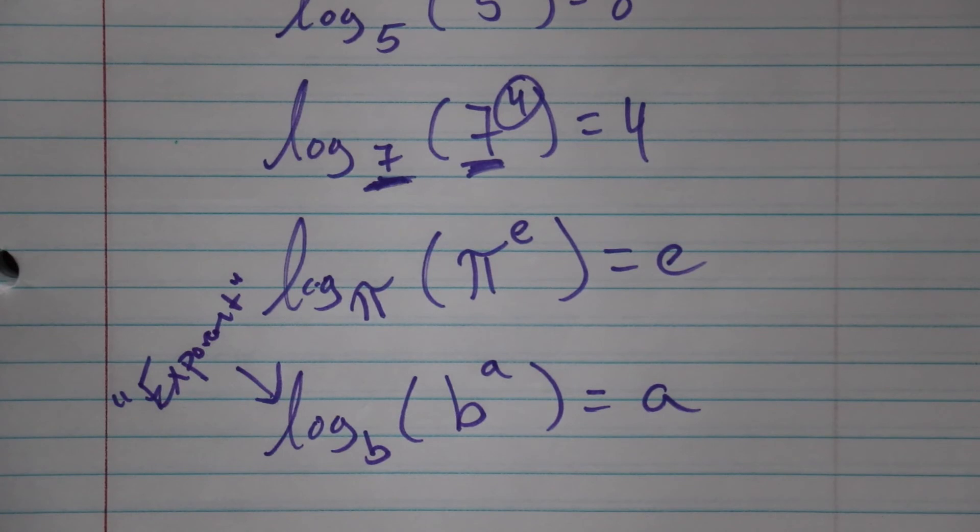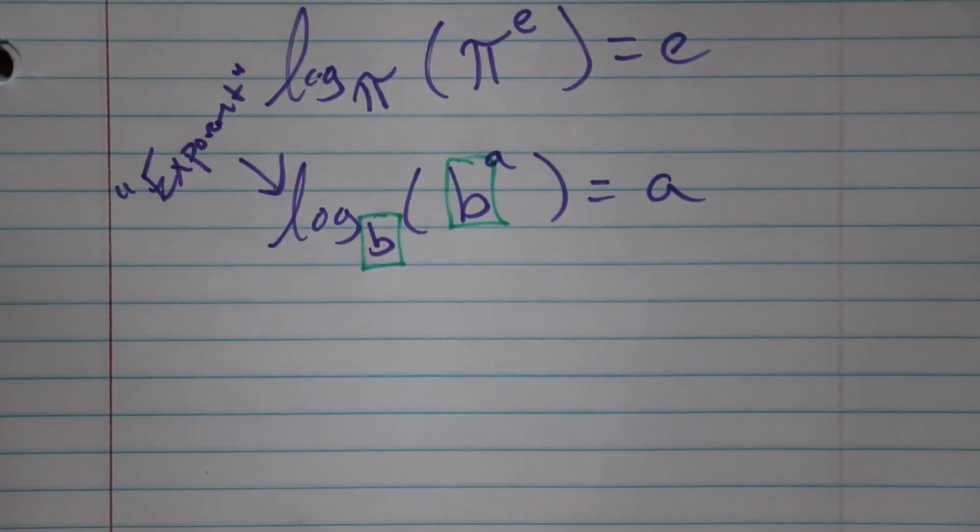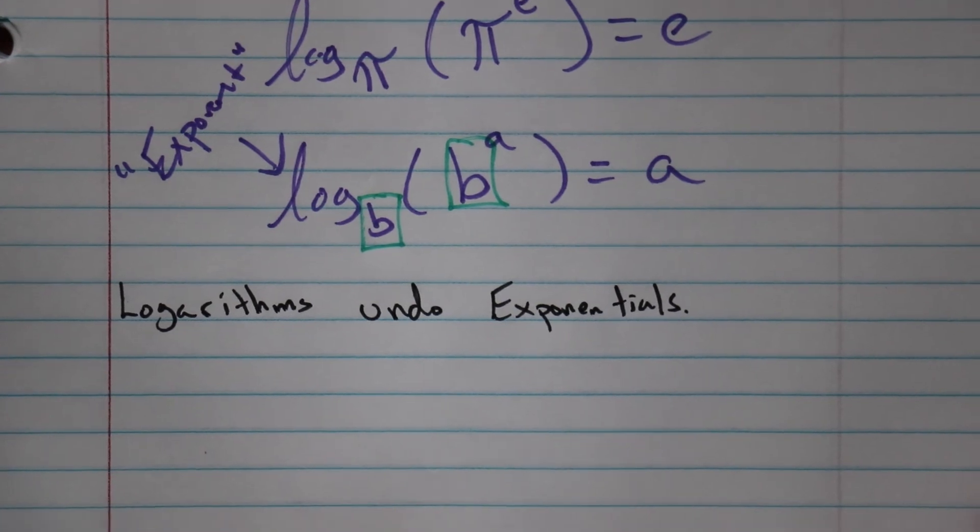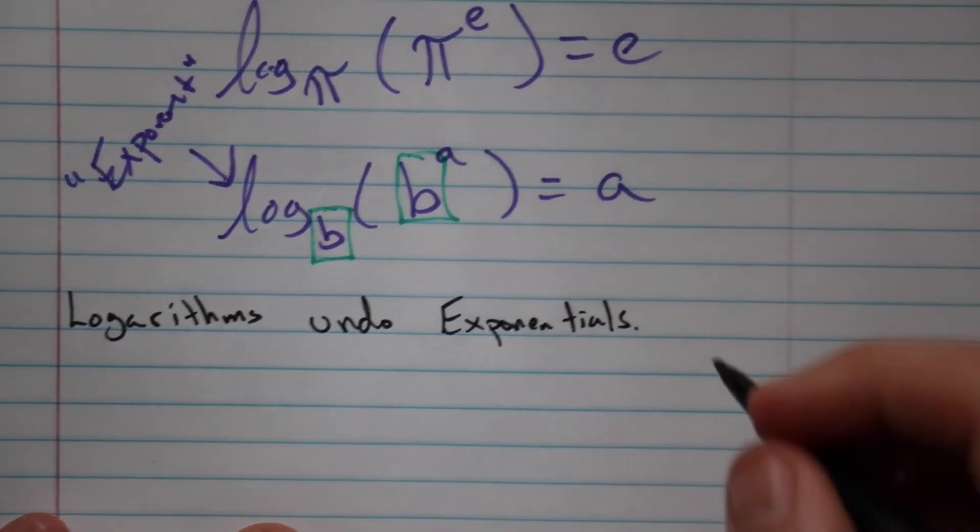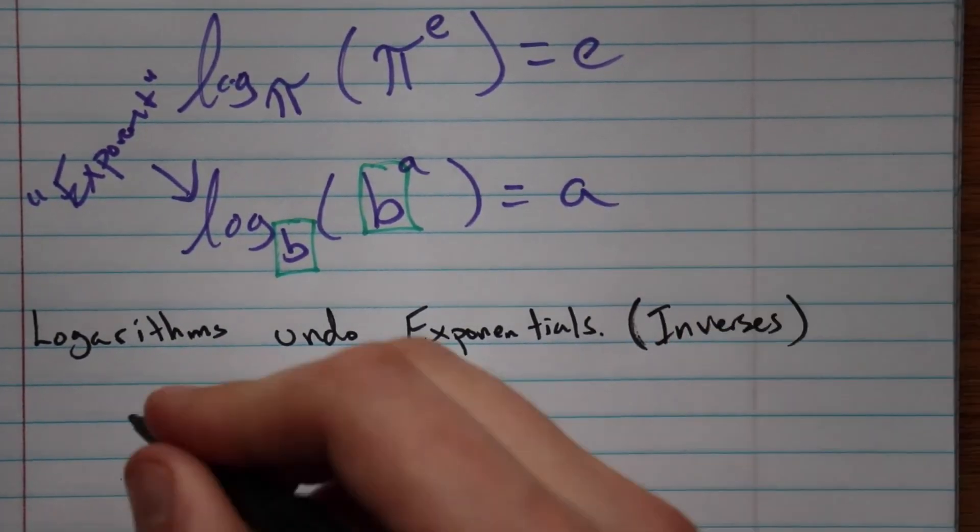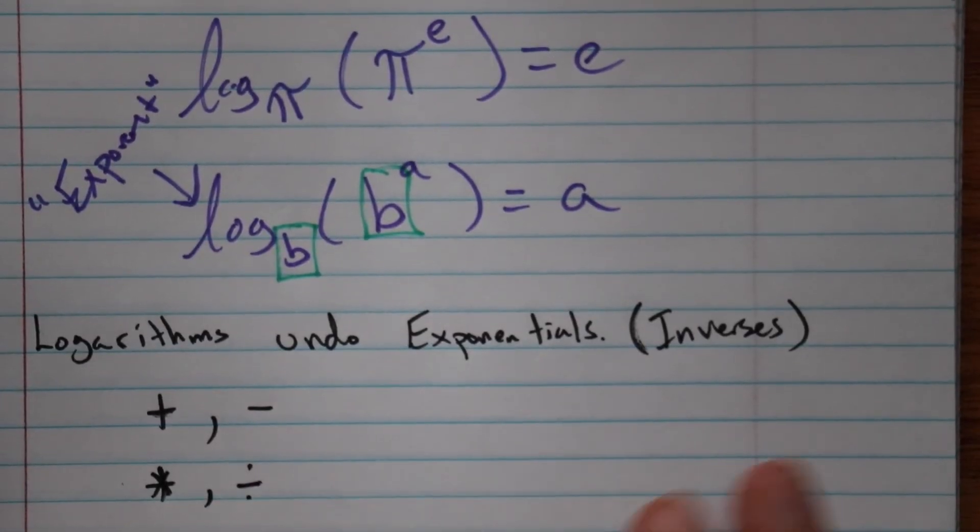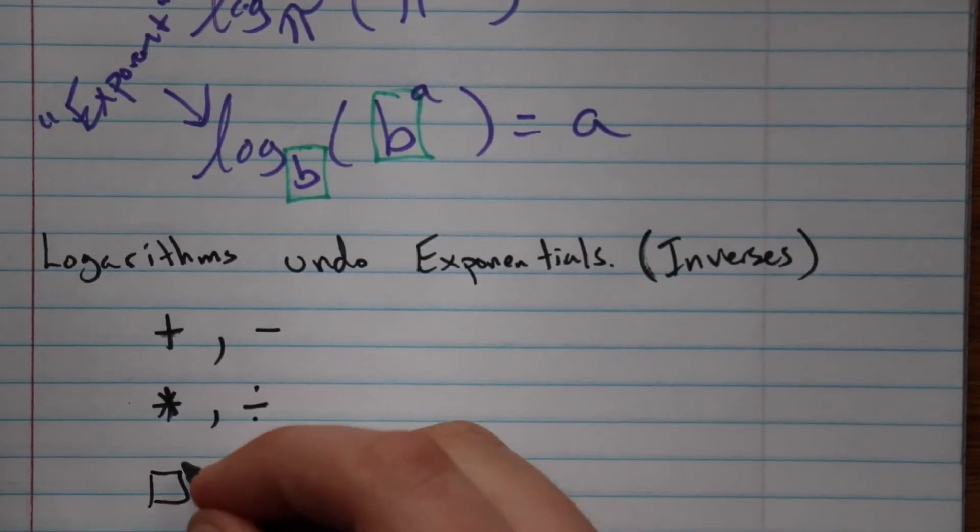So those logarithms are going to always equal that exponent if these bases match up. And that's really great because now we have a way to undo exponentials. Logarithms undo exponentials, or in other words, they are inverses, like addition and subtraction, multiplication and division, squaring and square rooting.